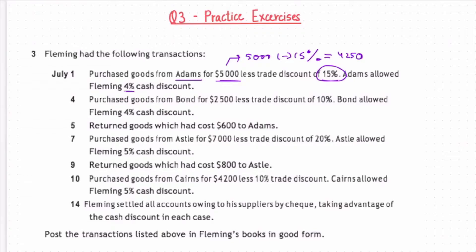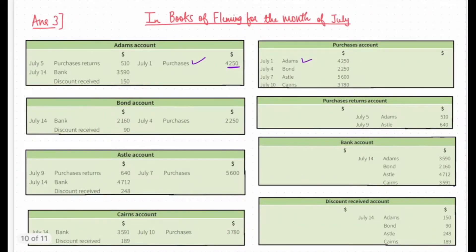On July 4th, Fleming purchased goods from Bond for $2,500 less a trade discount of 10%, followed by a 4% cash discount. The purchase cost here will be $2,500 less 10%, which will be $2,250. The entry will be Purchase account debit to Bond. In Purchase account, Bond account will be debited, and in Bond account, Purchases will be credited.